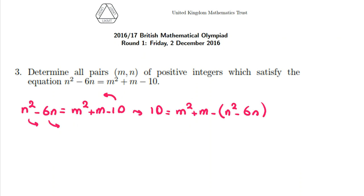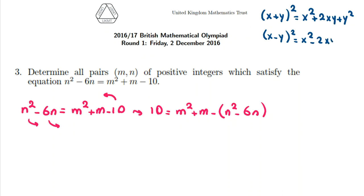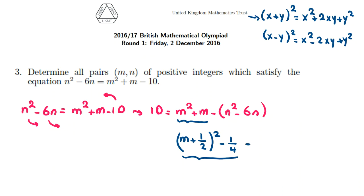Now I want to factorize by completing the square. You should know these two identities: (X + Y)² = X² + 2XY + Y², and (X - Y)² = X² - 2XY + Y². Using this, M squared plus M equals (M + 1/2)² minus 1/4, so we subtract 1/4.